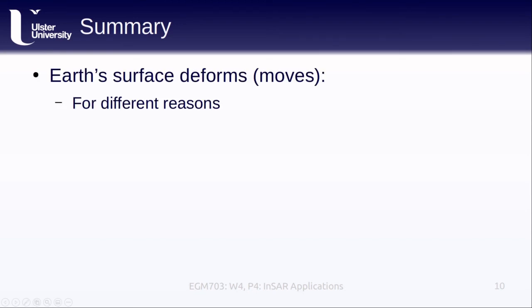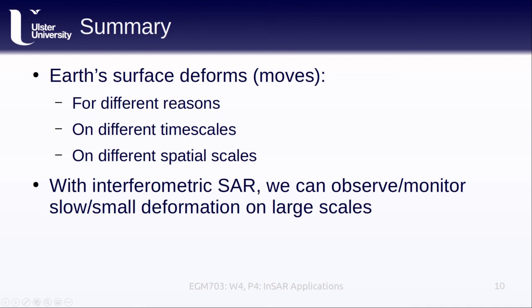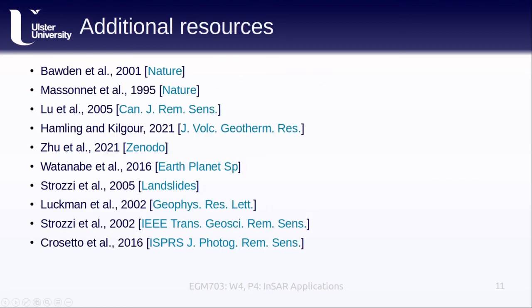In this lesson, we've discussed how the Earth's surface deforms or moves for different reasons, on different time scales, and on different spatial scales. We've seen a number of examples showing how with INSAR and differential INSAR, we can actually observe this motion, even though it's often small on the scale of centimeters, on large spatial scales from space. Links to the different articles referenced in the presentation are included here and are also available on the slide notes, and you can find PDF versions of the articles in the Zotero library. There are also additional papers linked in the Zotero library that weren't covered here, so feel free to browse those as well. That's all for this lesson — I hope you found it interesting, and if you have any questions, please don't hesitate to email me or post in the discussion forum on Blackboard.